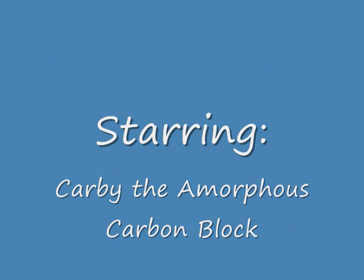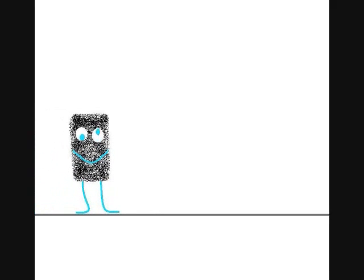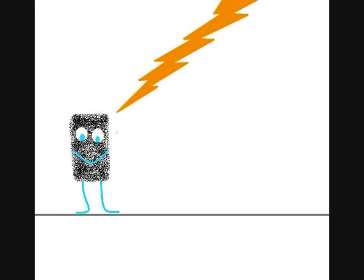One day, Carby, the amorphous carbon block, was walking around the macro world, wondering what it would be like to be really small. "Hmm, I wonder what it would be like to be really small!" Then, all of the sudden... NANO LIGHTNING!